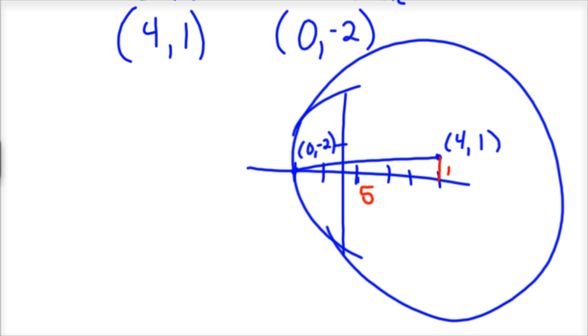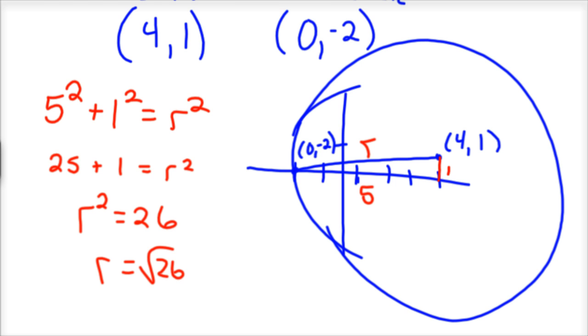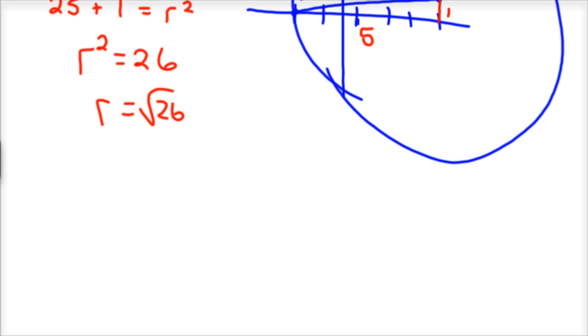And so we can do Pythagorean theorem then to find r, the radius of your circle. So 5² + 1² equals r². That's 25 + 1. So r² is equal to 26. You root both sides. r is equal to the root of 26.